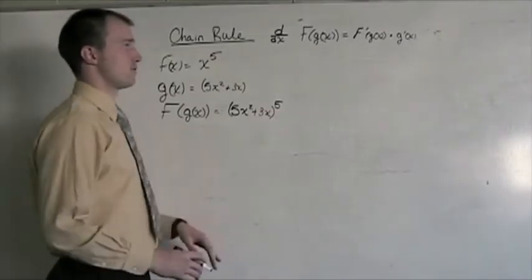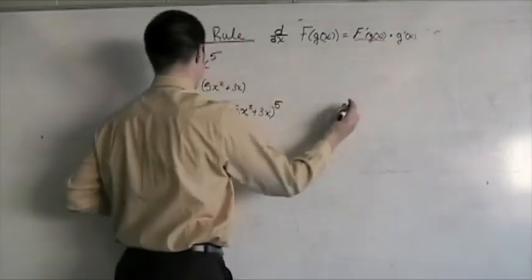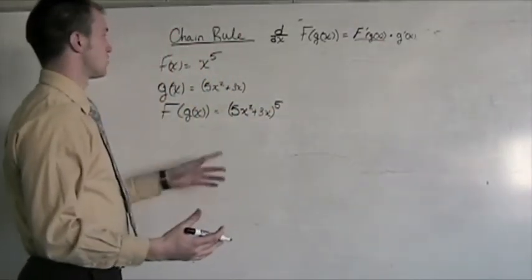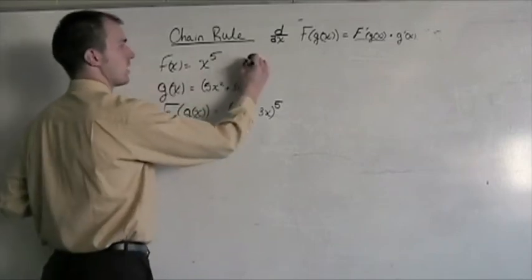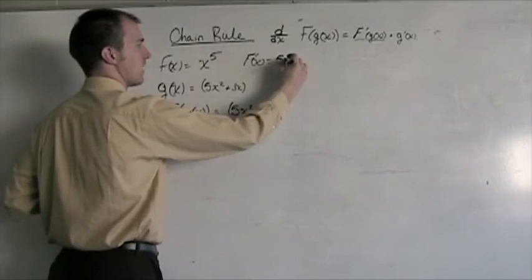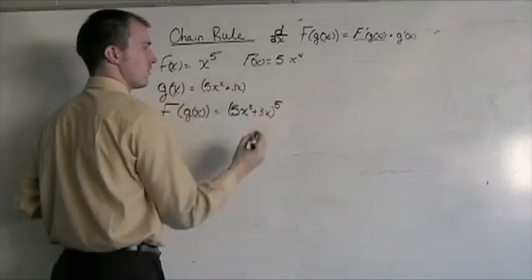f prime of g of x. I'm looking at differentiating here. f prime of g of x is really, if we take f prime of x, we see that that's going to be 5 times x to the 4th.